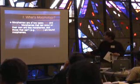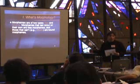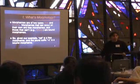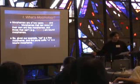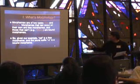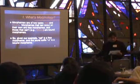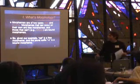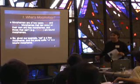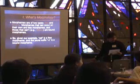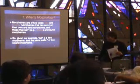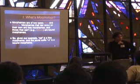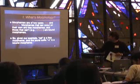Morphemes come in two types: free and bound morphemes. Morphemes that can occur on their own are free morphemes, and those that can't are known as bound morphemes — for example, affixes. In our example, 'cat' is a free morpheme because you can use it by itself as a noun. You can add '-s' and say 'cats are cruel,' but you can't say 's is cruel' meaning some plural entity is cruel. That's what we mean by the '-s' being a bound morpheme.